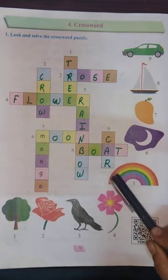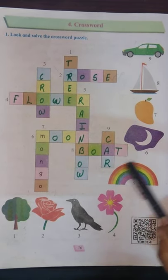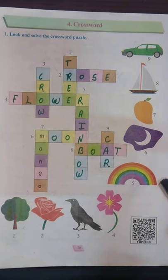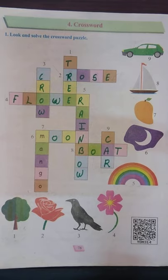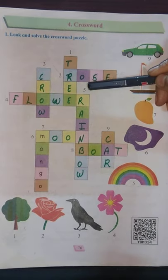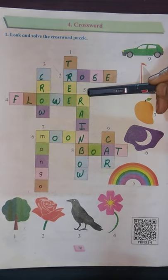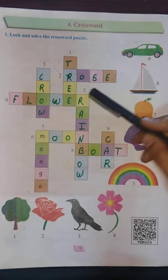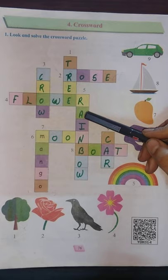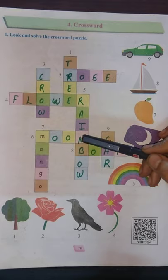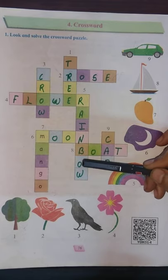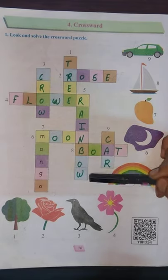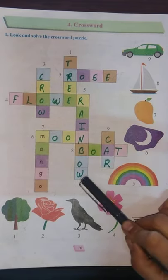Fifth one. Which picture student see here? Rainbow. Five number here. Rainbow spelling — R-A-I-N-B-O-W. Rainbow. Okay.